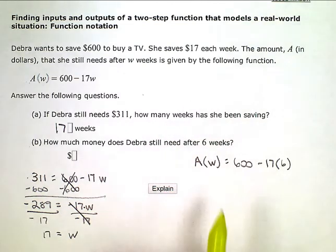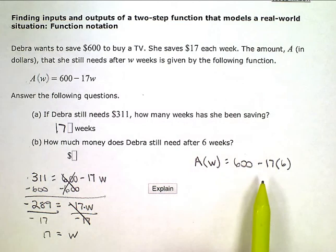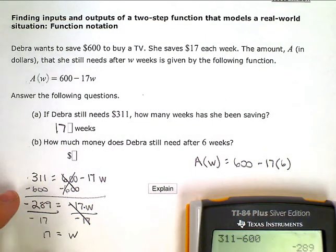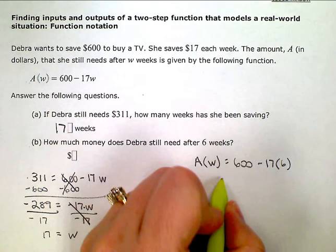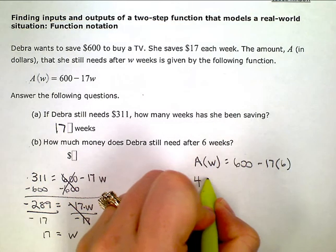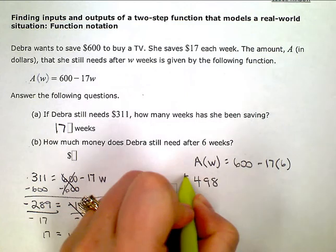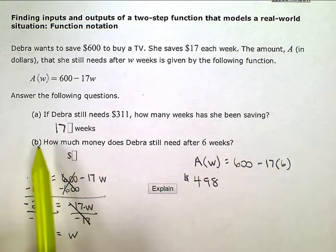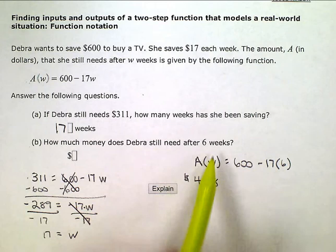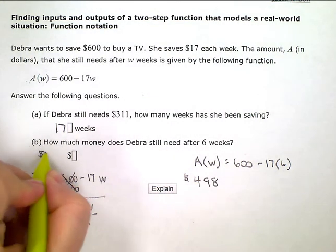So I just need to simplify this numerically, do the calculation or the arithmetic there. So 600 minus 17 times six gives me 498. So how much money does she still need after six weeks? The answer is 498.